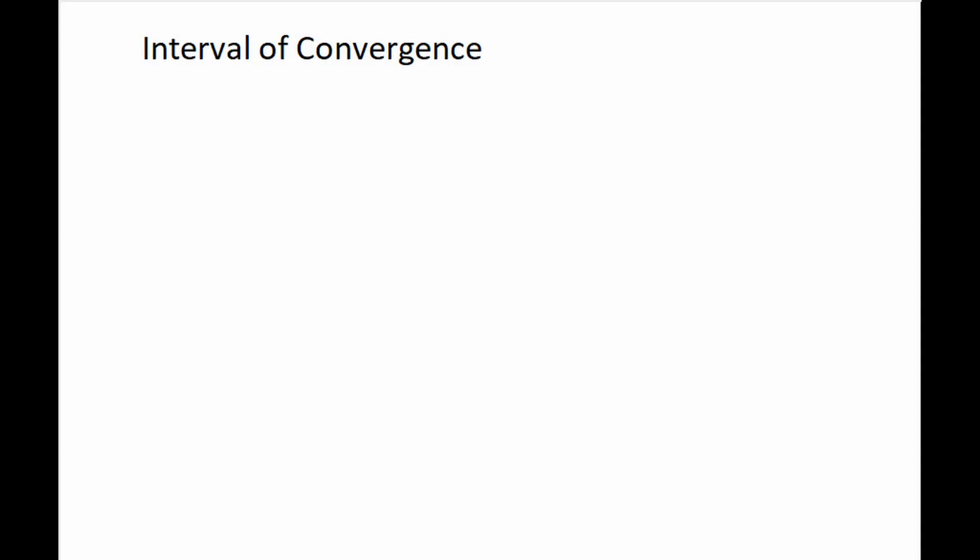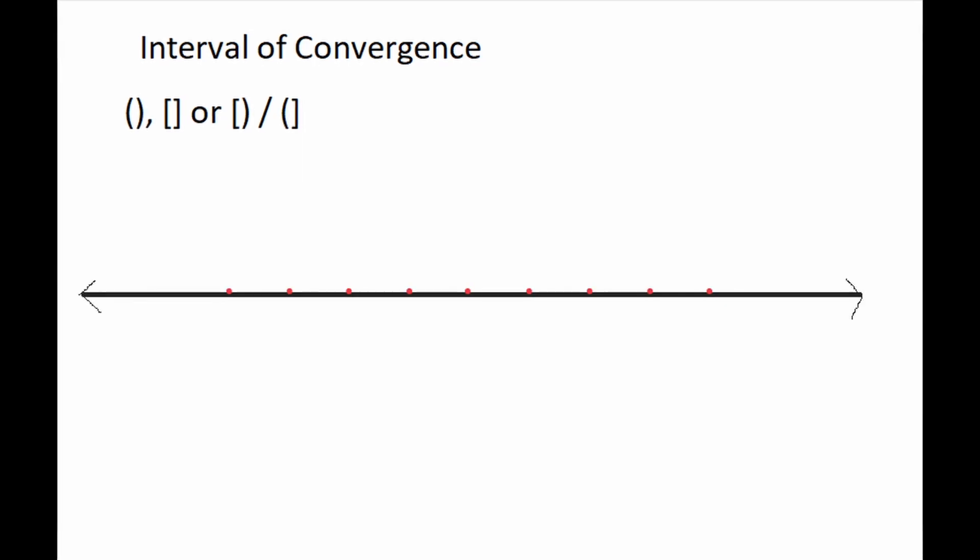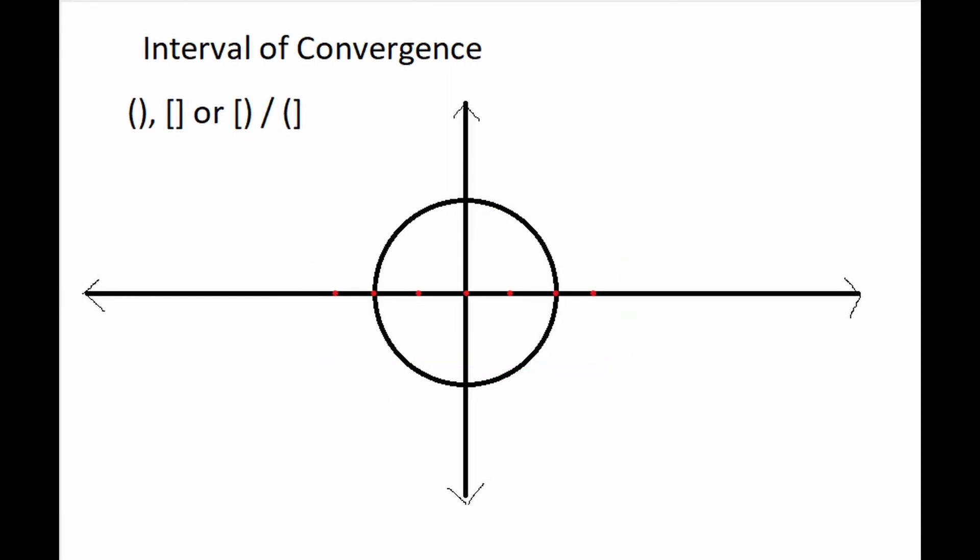Interval of convergence is any open, closed, or semi-closed set of values of x for which the Taylor series converges to the value of the function. Outside this interval, the Taylor series is either undefined or does not relate to the function. The radius of convergence is half the length of the interval. Later we will see that this is the radius of the circle in the complex plane that the Taylor series converges.